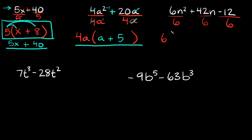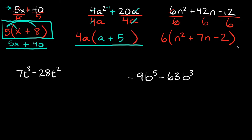Pull the 6 out and draw the parentheses. Simplifying each term: 6n squared divided by 6 — the 6's cancel, leaving n squared. Then plus 42n divided by 6: 42 divided by 6 is 7, and we still have the 'n', so that gives us 7n. Then negative 12 divided by 6 equals negative 2. So the final answer is 6 times the quantity n squared plus 7n minus 2.